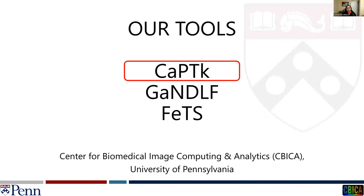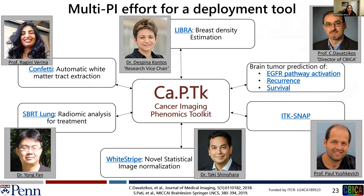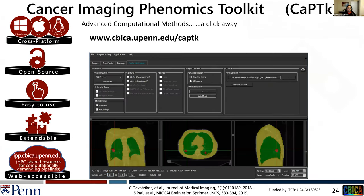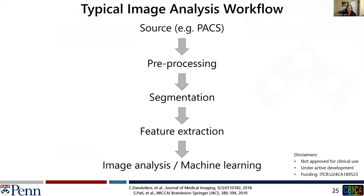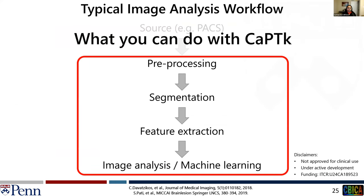All tools developed at our center have been built keeping these sources of variation in mind. Starting with the Cancer Imaging Phenomics Toolkit, or CaPTk — a multi-PI effort to develop a deployable, easy-to-use, and extendable tool. It is truly cross-platform, open source, and accessible via the web. Using CaPTk, you can do preprocessing, segmentation, radiomic feature extraction, and train traditional machine learning models. All computational analysis steps, apart from interaction with the PACS, can be done via CaPTk.